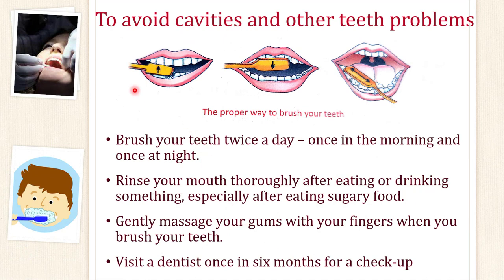Now let's see what we can do to avoid cavities and other tooth problems. We must brush our teeth twice a day — once in the morning and once at night. Rinse our mouth thoroughly after eating or drinking, especially after eating sugary food. Gently massage your gums with your finger when you brush your teeth. Visit a dentist once in six months for a checkup.